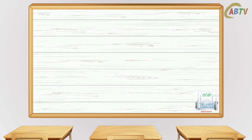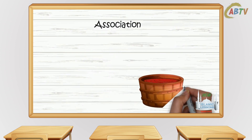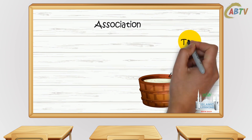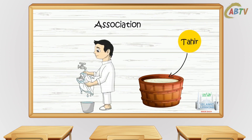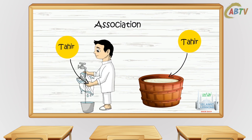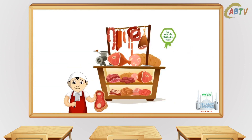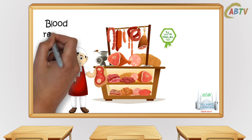The next purifier is called association. So when a najas thing becomes tahir, the thing associated with it becomes tahir too. For example, when wine turns into vinegar, it is considered tahir — and so does the container associated with it. Or if you are washing a najas shirt, when the shirt becomes tahir, your hands associated with it become tahir too. The blood that remains inside the body of an animal that is permissible to eat and was slaughtered according to Islamic law is tahir.